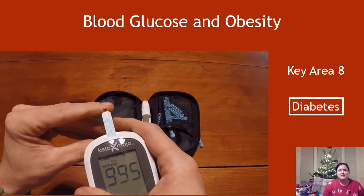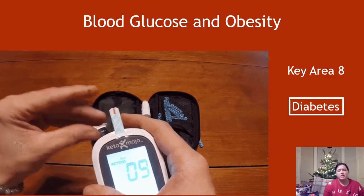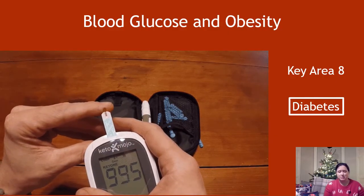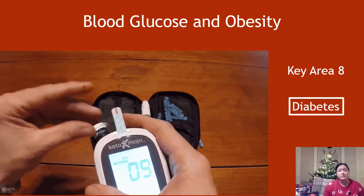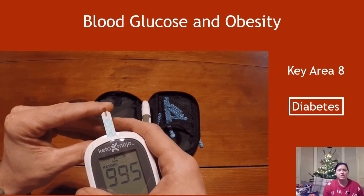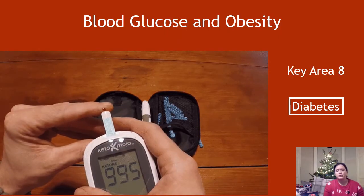Hi there. We're into video two of key area eight, blood glucose and obesity. This is the final key area for unit two and we are nearly done, and this is going to be about diabetes.